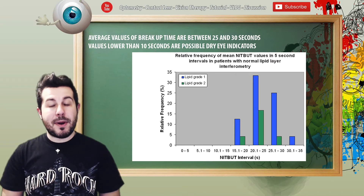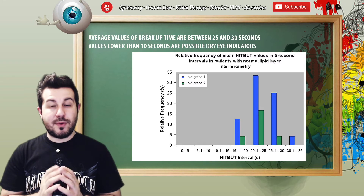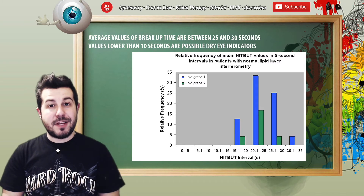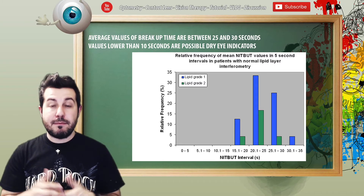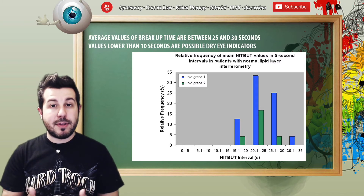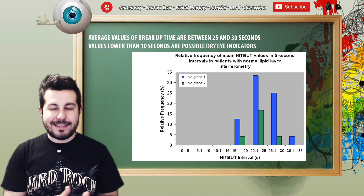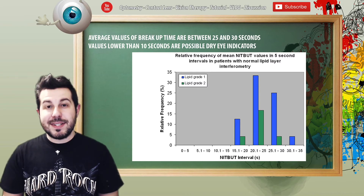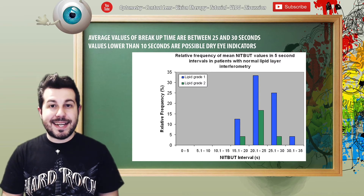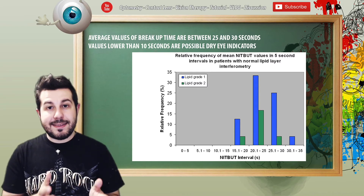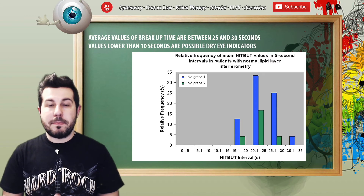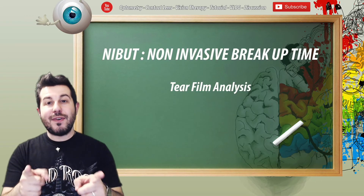The NIBUT test is a very powerful instrument to evaluate tear film because it's more repeatable and more reliable than the BUT test. We can also use NIBUT result data to choose the right lens for our patient.